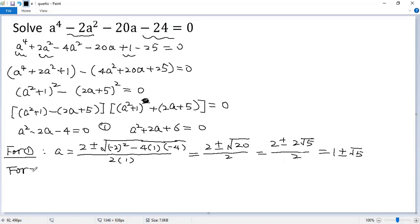For the second equation, because the discriminant delta equals b squared minus 4ac equals negative 20, less than 0, there is no real solution.